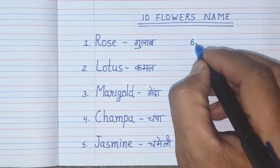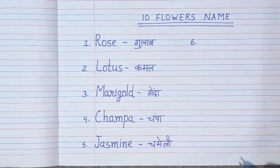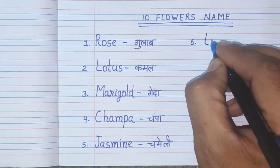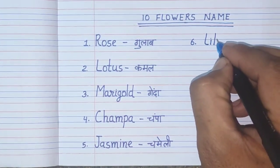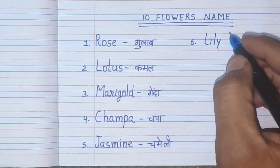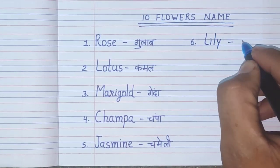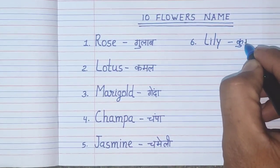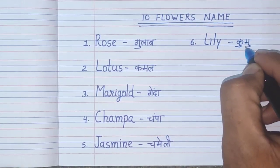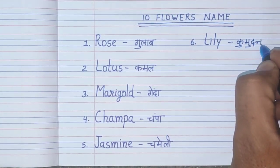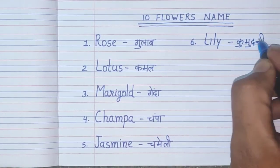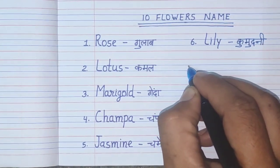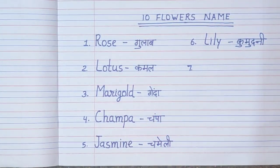Number 6. L-I-L-Y. Lily. Lily means Kumudani.